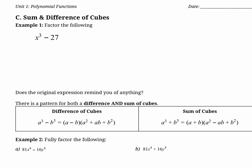Now that we know the factor theorem and how to use it to factor polynomials, we can use it for any polynomial. So let's say that we don't know how to factor sum and difference of cubes — we can always factor anything using the factor theorem and remainder theorem.